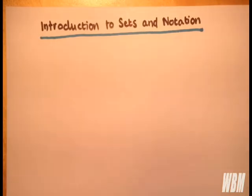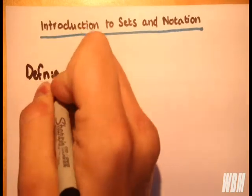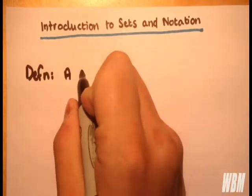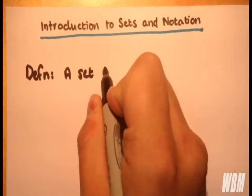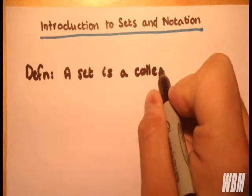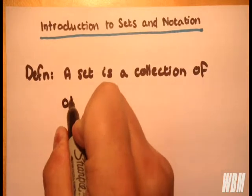So first off, we're going to ask: what exactly is a set? So we're going to go off a definition. The definition of a set: a set is simply a collection of objects. That's all it is.